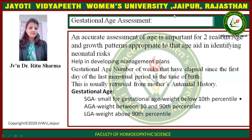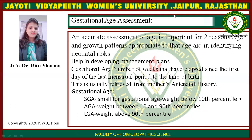Accurate assessment of gestational age is important for two reasons: age and growth patterns appropriate to the age aid in identifying neonatal risk and help in developing management plans. Gestational age is the number of weeks elapsed since the first day of the last menstrual period to the time of birth, and is retrieved from the mother's antenatal history. Classifications include SGA (small for gestational age, weight below 10th percentile), AGA (weight between 10th and 90th percentile), and LGA (weight above 90th percentile).